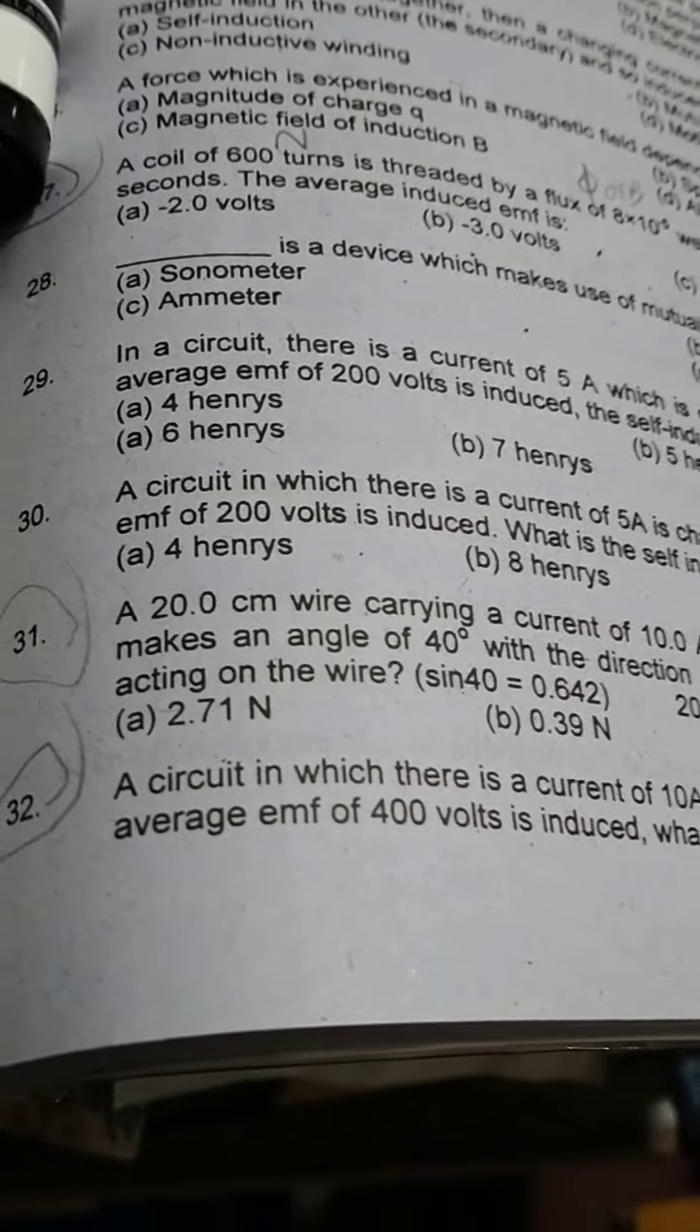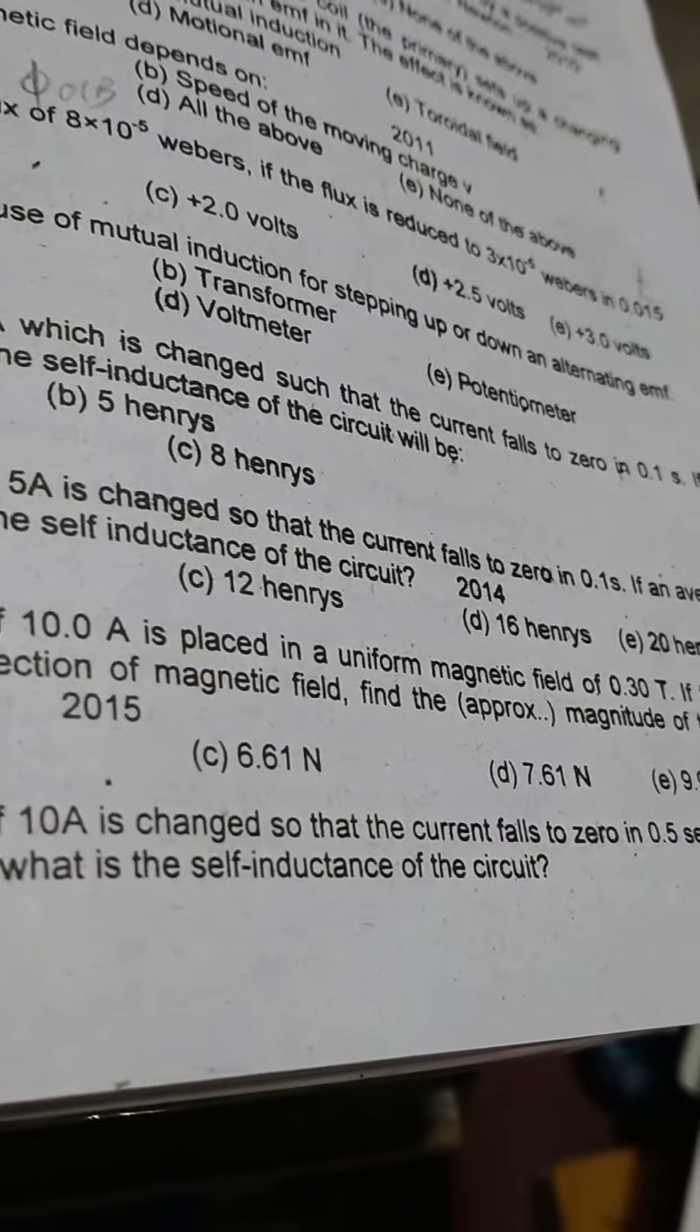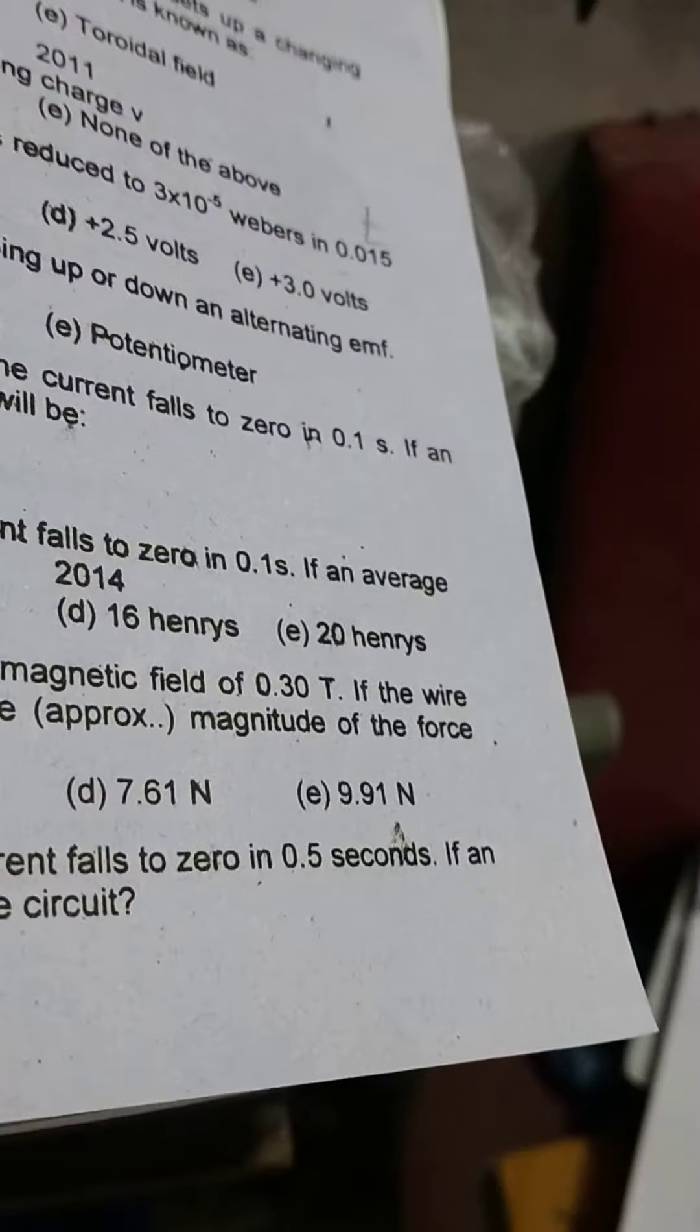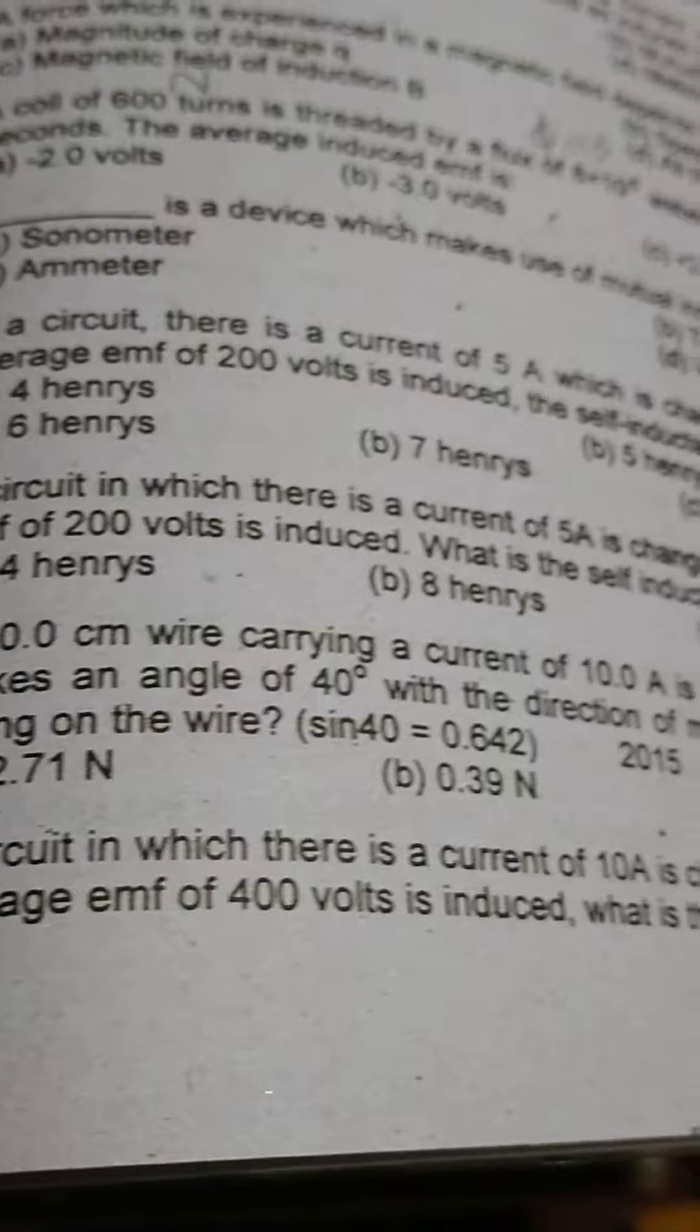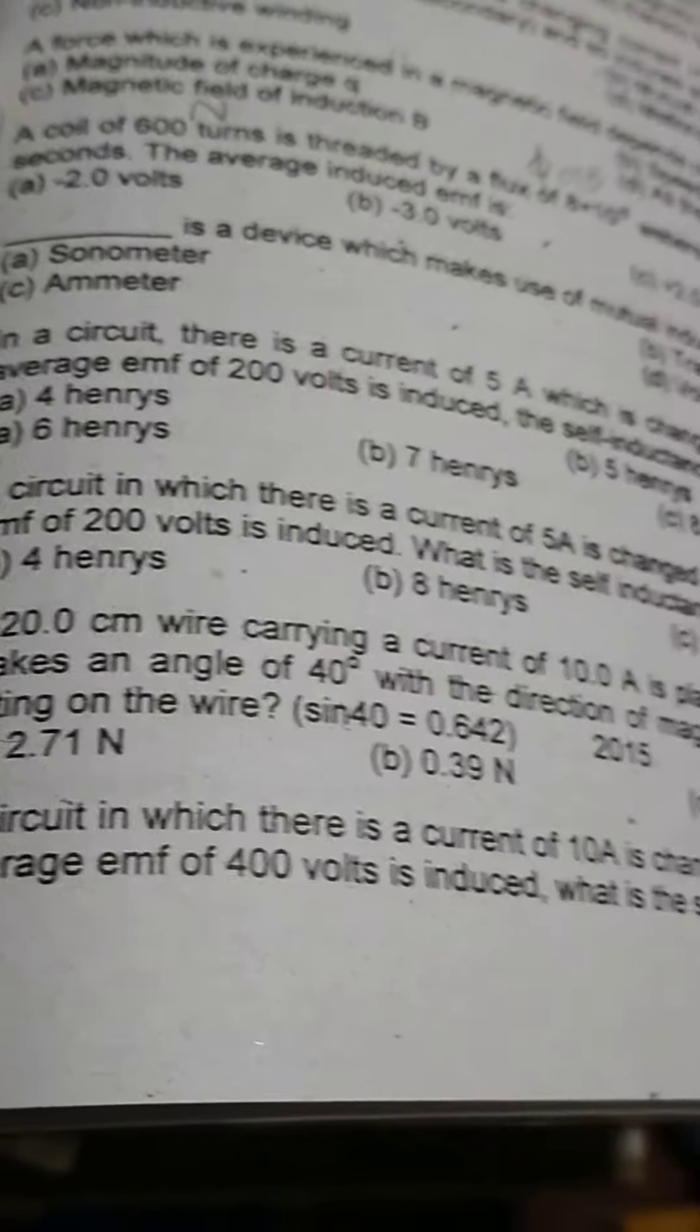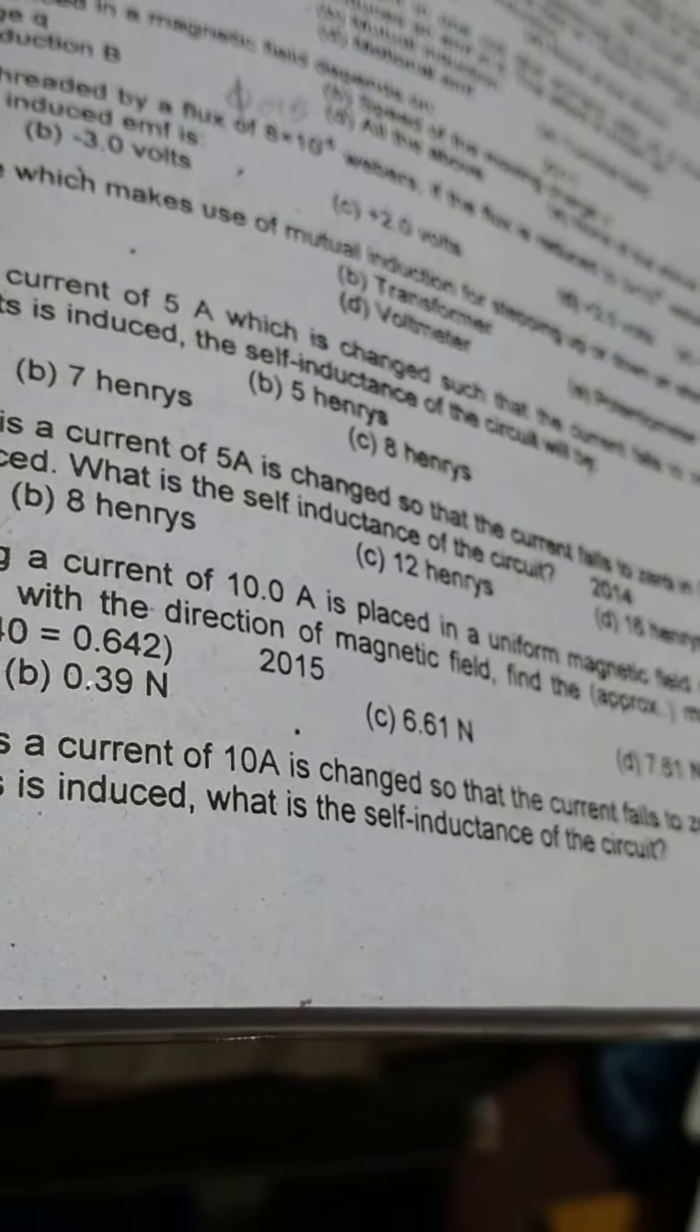A good question is: a 20 centimeter wire carrying a current of 10 ampere is placed in a uniform magnetic field of 0.3 tesla. If the wire makes an angle of 40 degree with the direction of magnetic field, find the approximate magnitude of the force acting on the wire. Sin 40 equals 0.642.